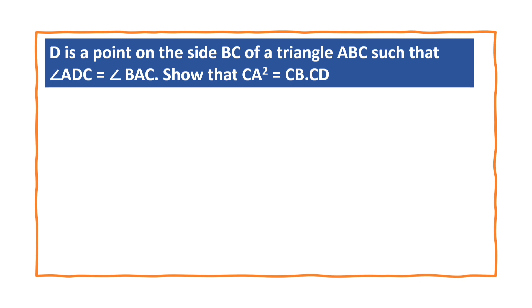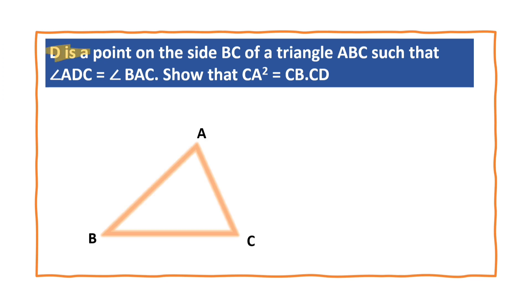Here we are not given the figure, so let us draw triangle ABC. D is a point on side BC such that angle ADC is equal to angle BAC.